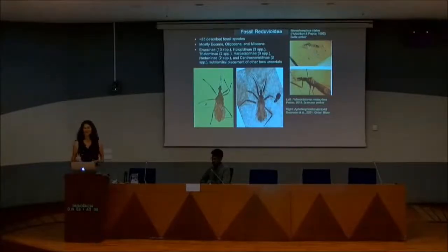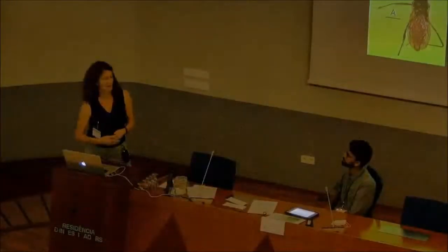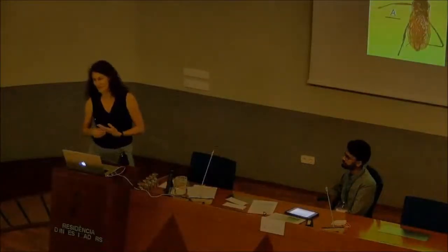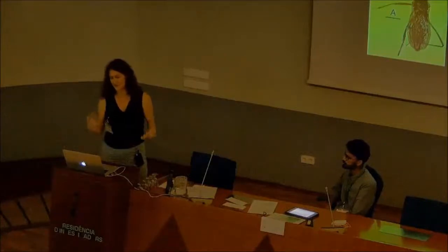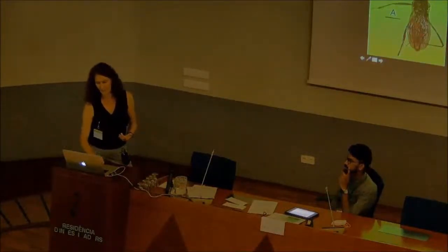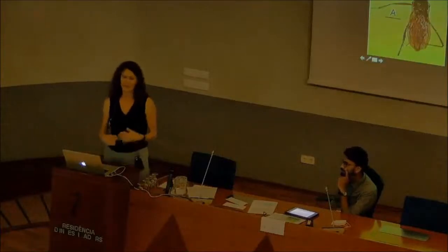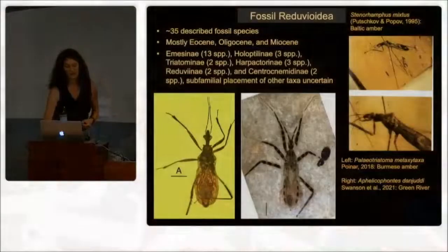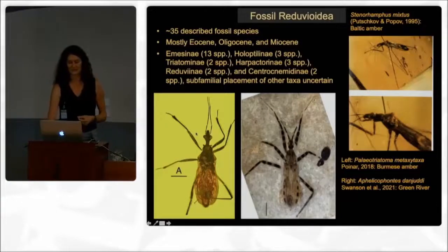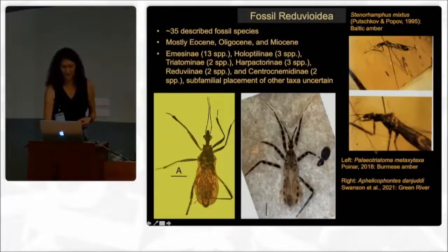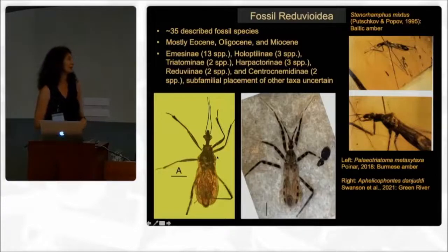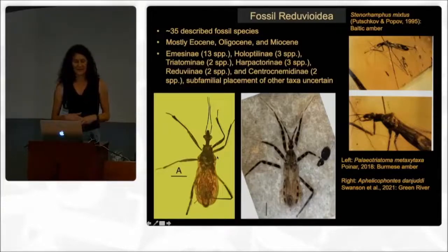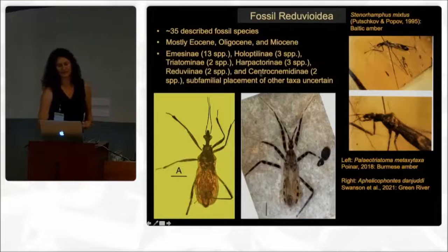I do want to remind you there are about 6,900 described extant species of Reduviidae. This is a fairly stark contrast to the number of described fossil species, which is only 35 of them, mostly described from the Eocene, Oligocene, and Miocene. And actually really only one very recently described species, Padiotriatoma metaxitaxa, from Cretaceous amber. I'm listing down here below the taxonomic distribution of these fossils.